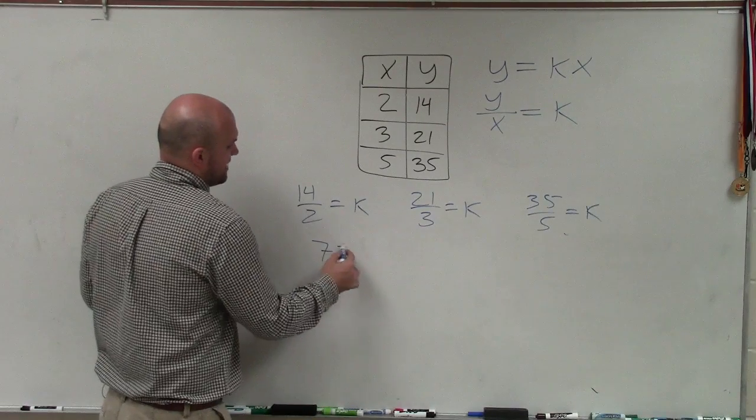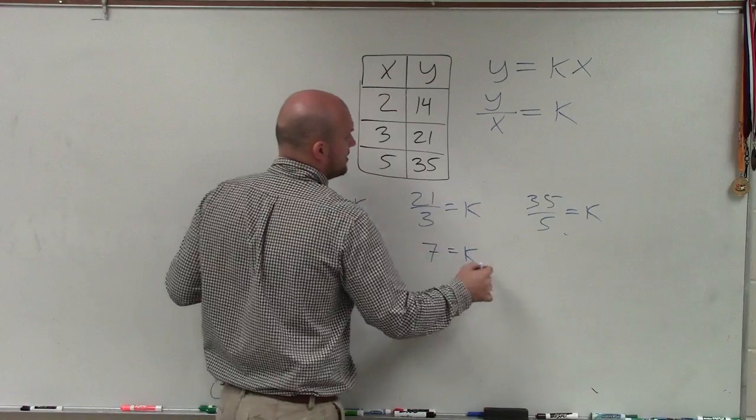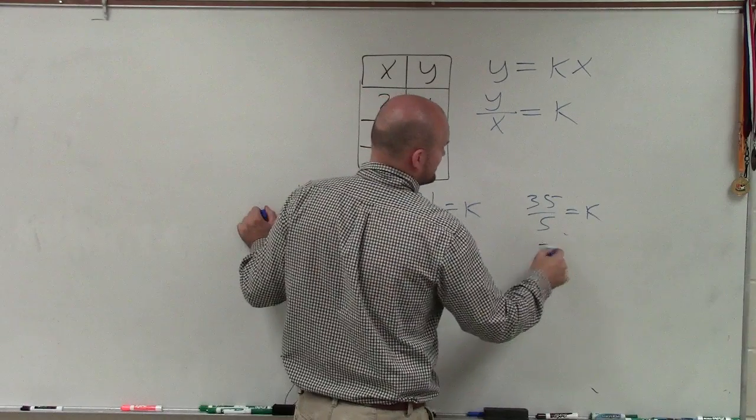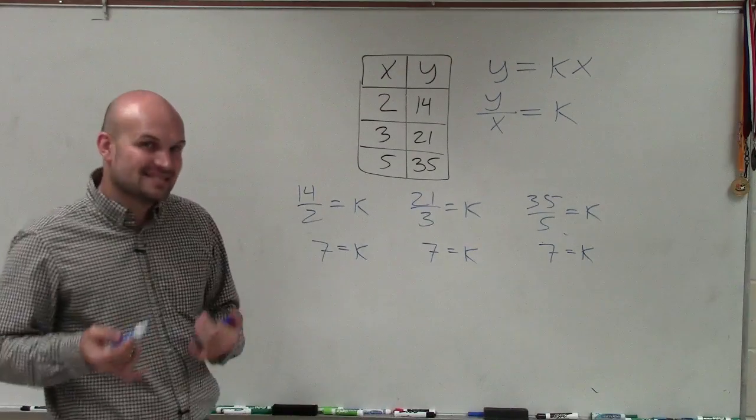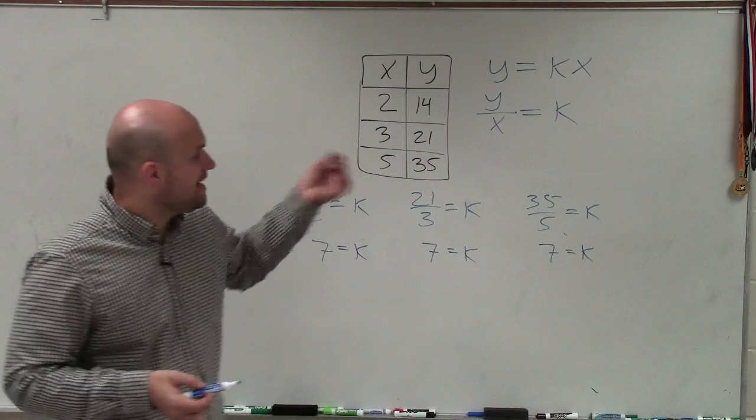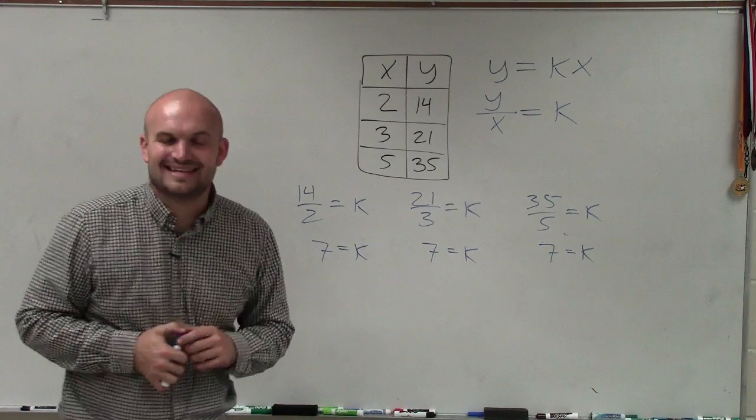14 divided by 2 is 7, which equals k. 21 divided by 3 is 7, which equals k. And 35 over 5 is 7, which equals k. Therefore, our k value is exactly the same. That is our constant, and we can determine that y does vary directly with x. Thanks.